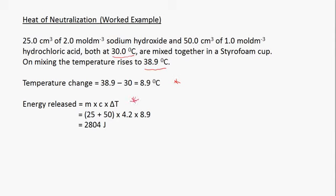Energy is equal to M multiplied by C multiplied by delta T. M is the total mass of the solution after mixing, C is the specific heat capacity at 4.2 joules per gram per degree Celsius, and delta T is the change in temperature. We had 25 cm³ of sodium hydroxide and 50 cm³ of hydrochloric acid, so the total volume is 25 plus 50, giving a mass of 75 grams. Multiplying 75 × 4.2 × 8.9, we get 2,804 joules.